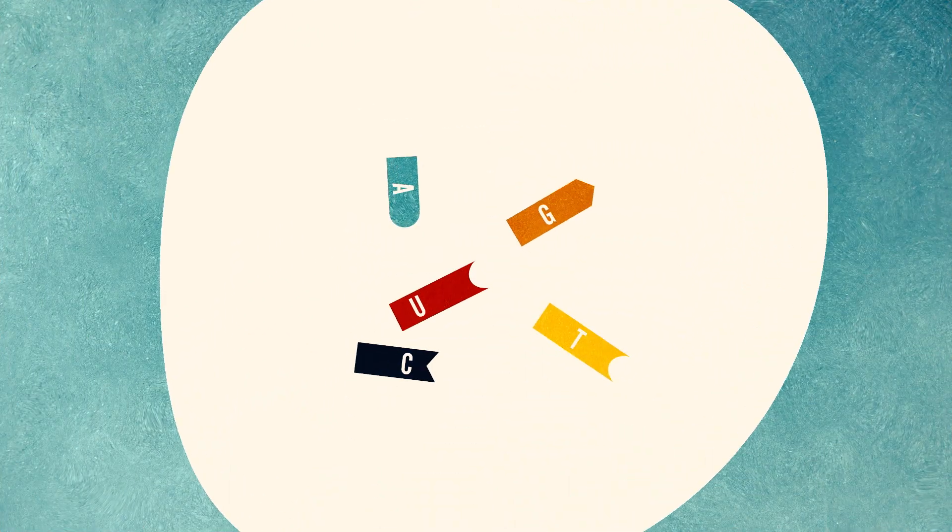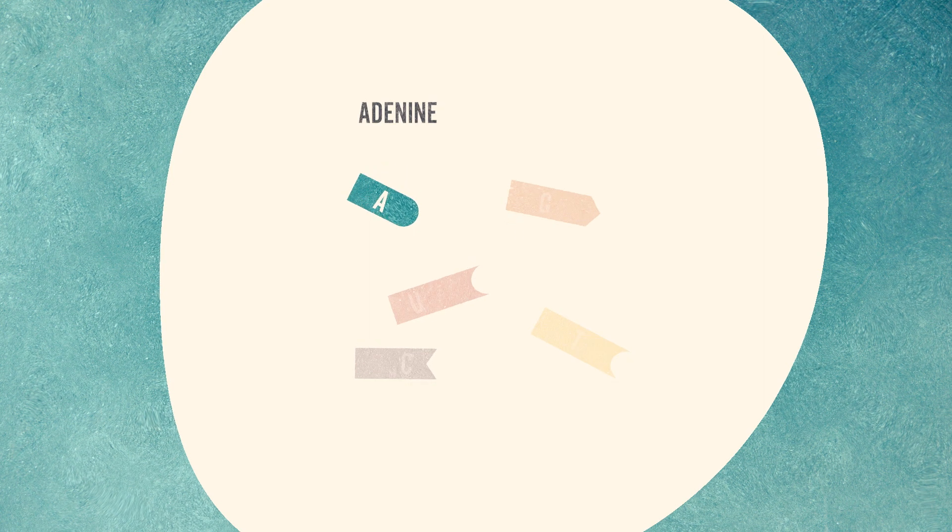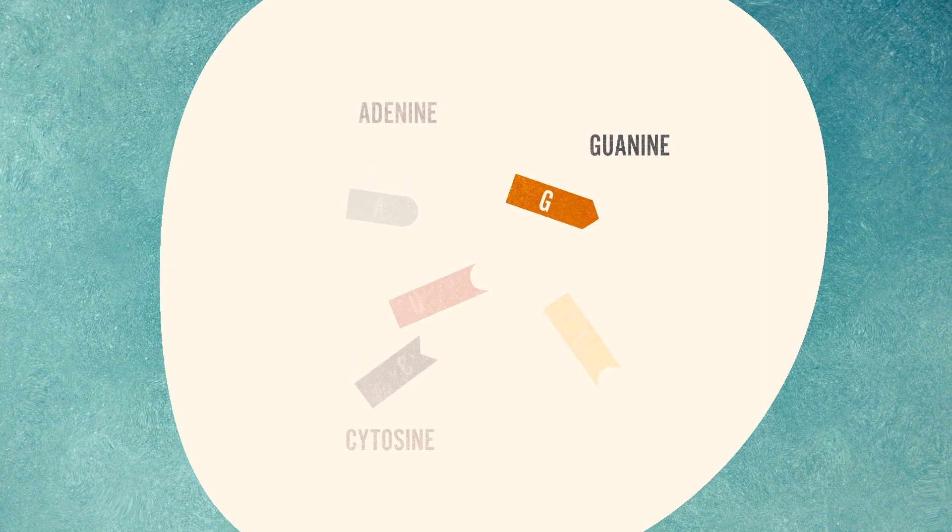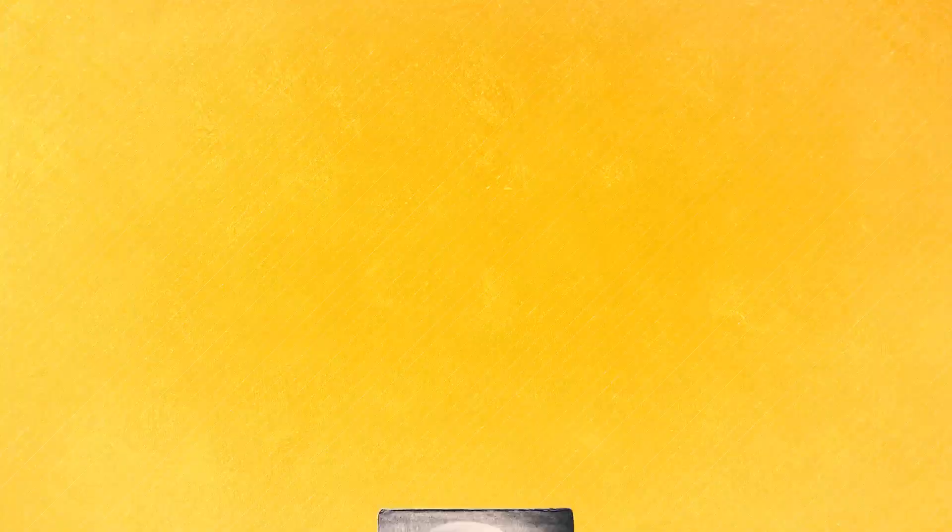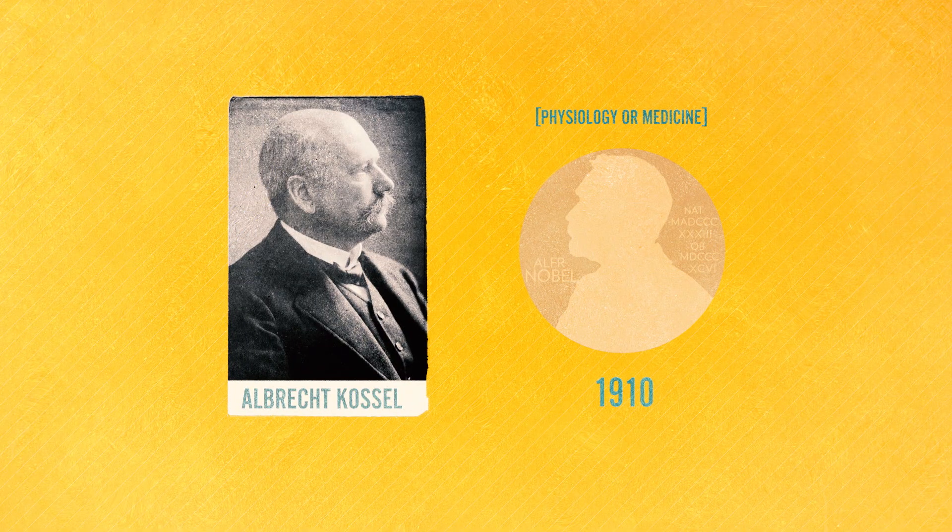Inside nuclein, Albrecht Kossel discovered the nucleobases adenine, cytosine, guanine, thymine and uracil. He received the Nobel Prize in Physiology or Medicine in 1910.